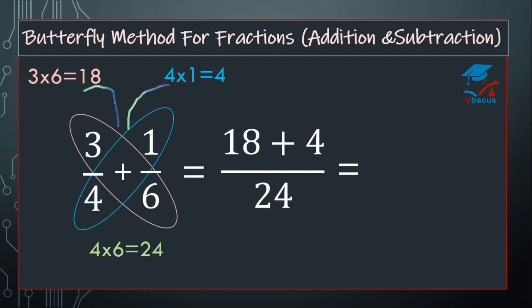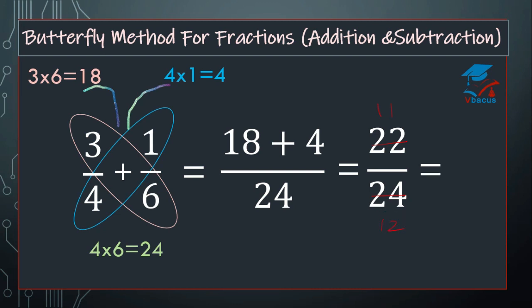Now you have to bring it to the lowest term. Divide 22 by 2, it will become 11. Divide 24 by 2, it will become 12. Your final answer will be 11 over 12. Let us go to the next sum.